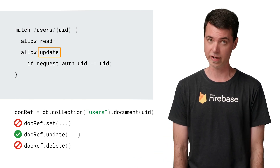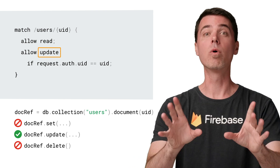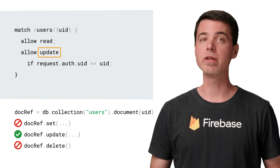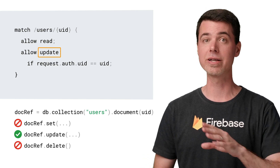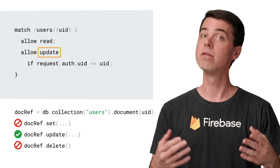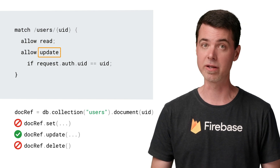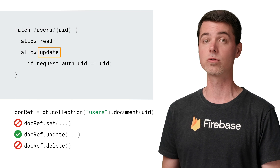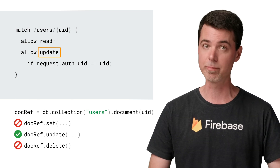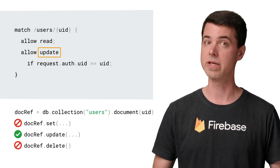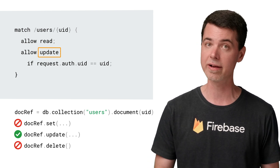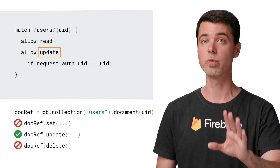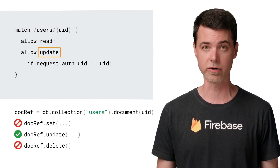One more thing before moving on. I mentioned before that I want to use Cloud Functions to automatically create and delete the user document. This is OK, because the Firebase Admin SDK and other Cloud Firestore server SDKs always bypass security rules. So even if you deny access to the client, your server code will always have access. So keep that in mind when designing your security rules.